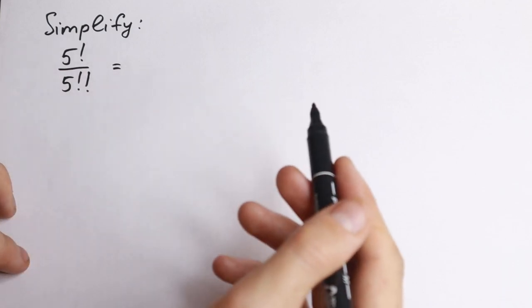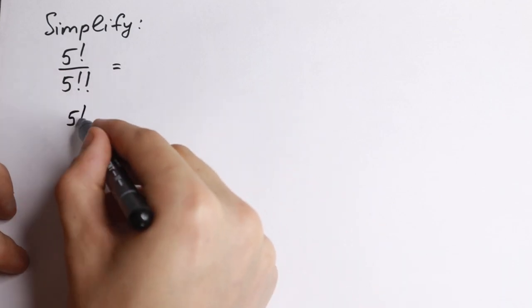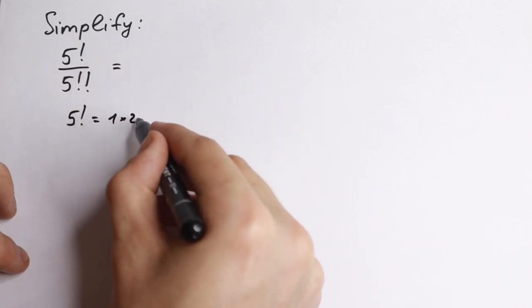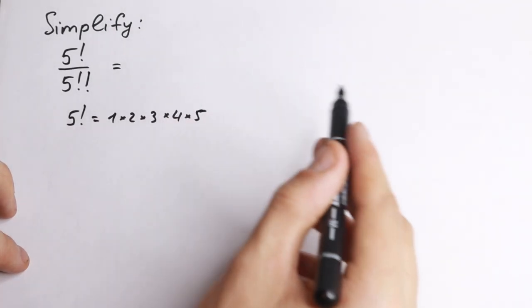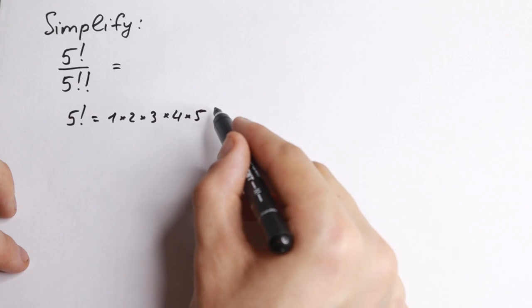First of all, we know about 5 factorial. Real quick, 5 factorial equals 1 times 2 times 3 times 4 times 5. And a lot of students know that this is equal to 120.